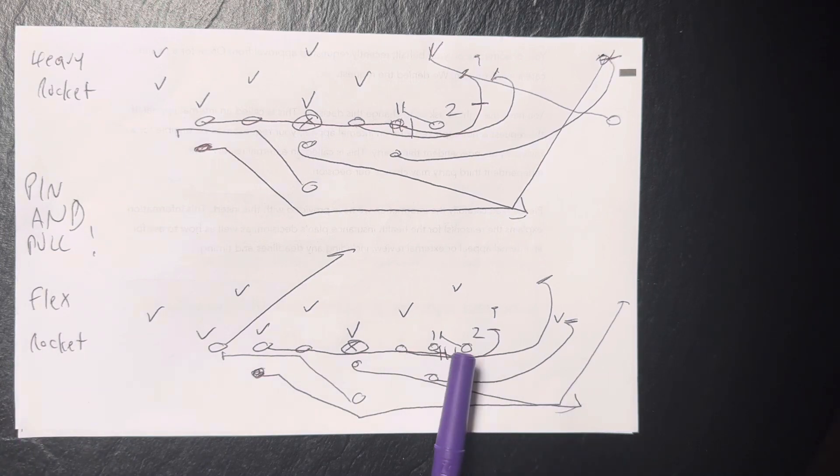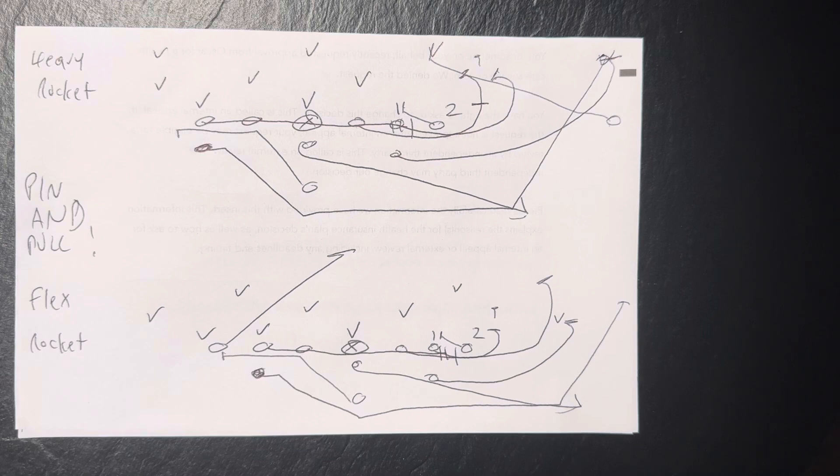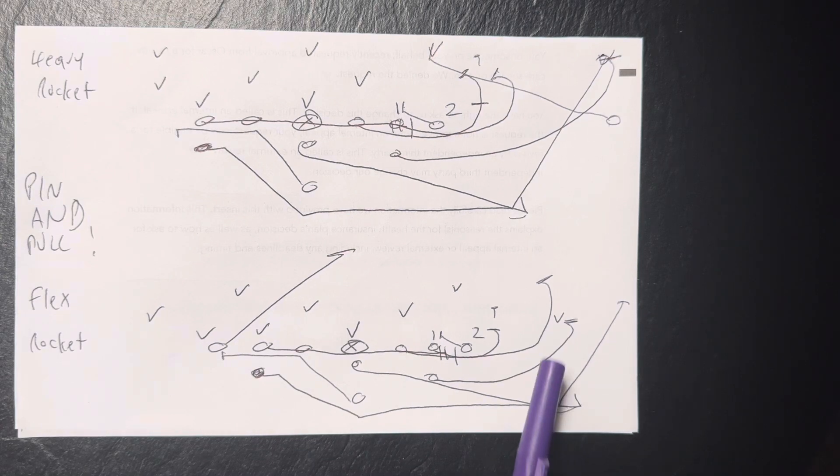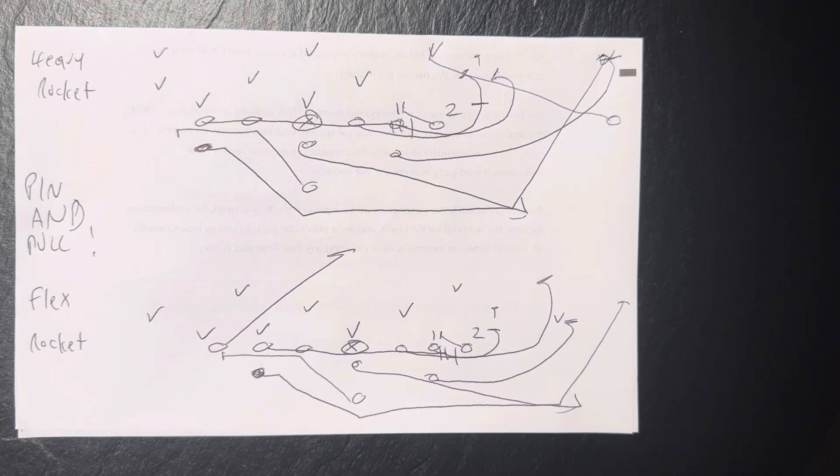Flex rock, it's the same thing. The only difference now is against two high safeties, you get more of a run support corner that very likely you'll have to kick him out, which is tough because it'd be better if you can get the A back's left knee through his crotch, but nevertheless, you're pinning and pulling it.